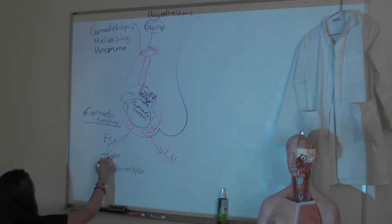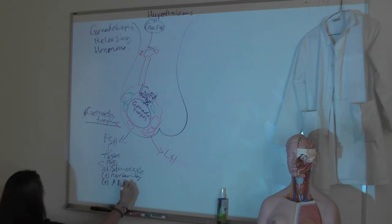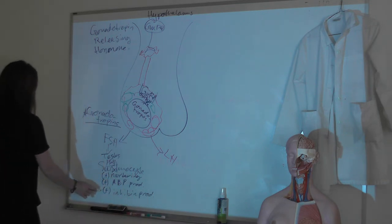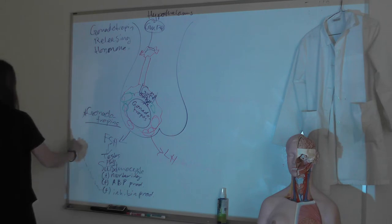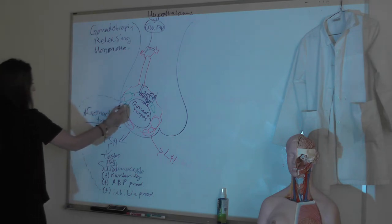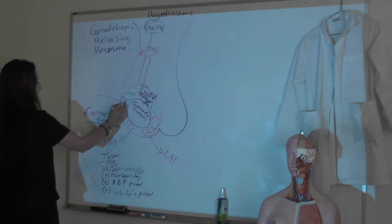I'm going to use the term sustentocyte. When FSH binds to its extracellular receptor, it's going to do several things. It's going to stimulate nurturing of our developing spermatocytes, stimulate androgen binding protein production, and stimulate inhibin production. Inhibin is going to enter the blood and selectively negatively feed back on gonadotropes by binding inhibin receptors, which will inhibit FSH release.